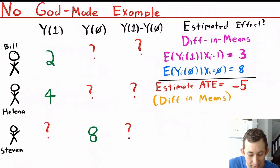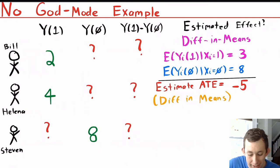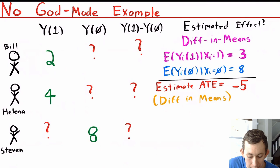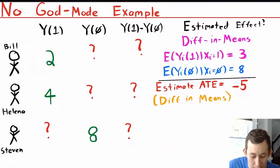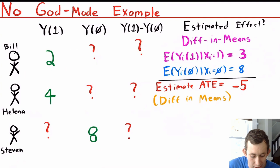So selection bias is making it so that what we estimate for the average treatment effect through this difference in means is much different than the true average treatment effect, which — if we knew everything — we could know is minus two. Let's take that same example and turn it into what we actually see in the data. In the data, we see that Bill and Helena have a cat, maybe Stephen does not, but we have no idea what any of the other numbers are. The only way to estimate an average treatment effect is through that difference in means. We get an estimated average treatment effect of minus five through that calculation. But if Bill and Helena are much different than Stephen, this estimate could be way off.